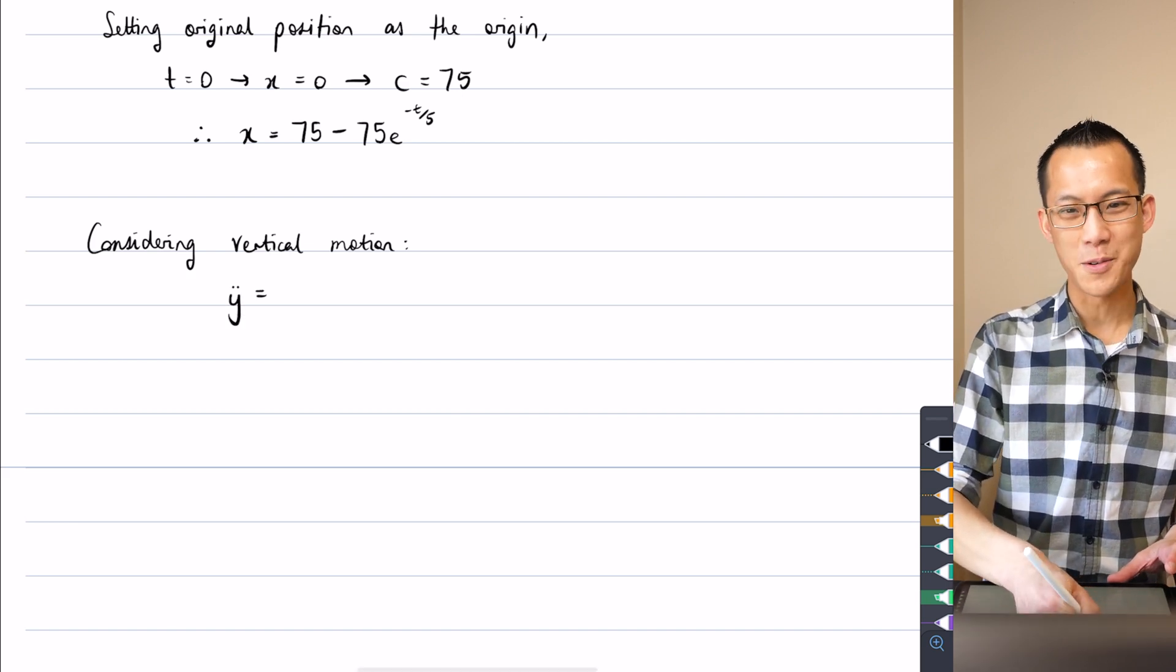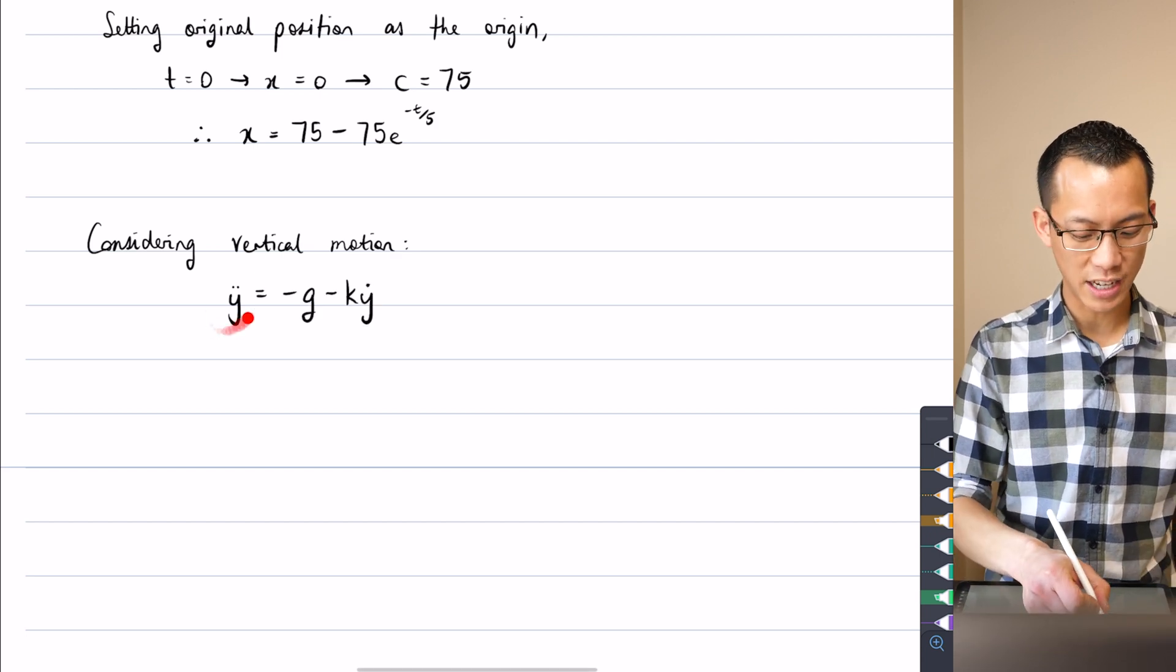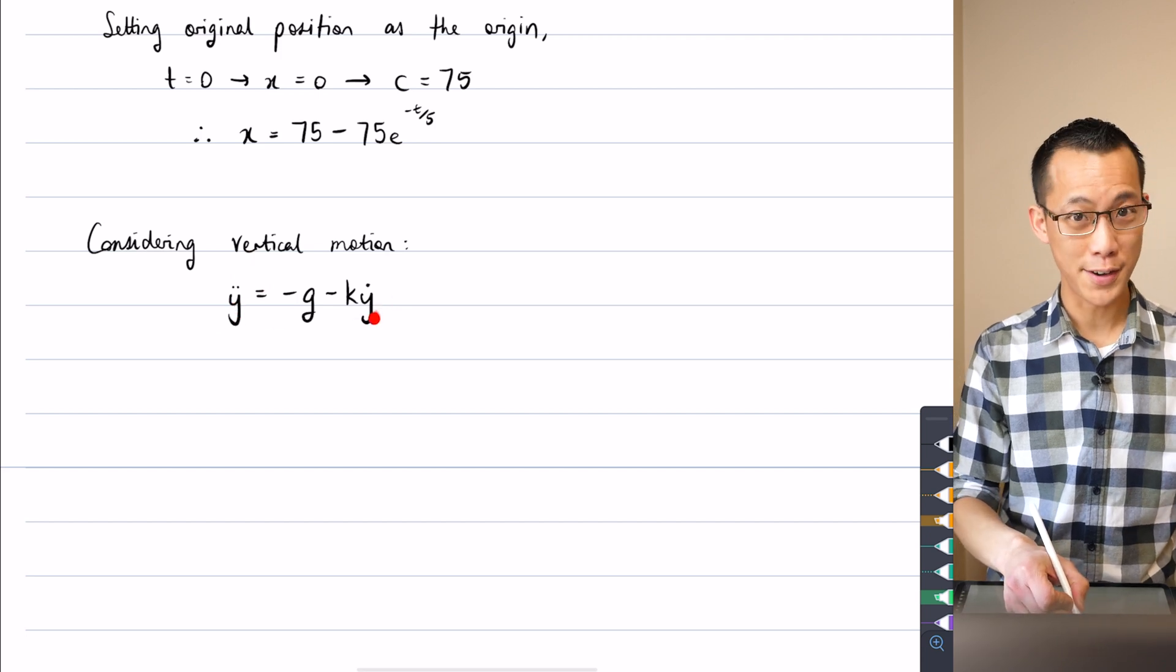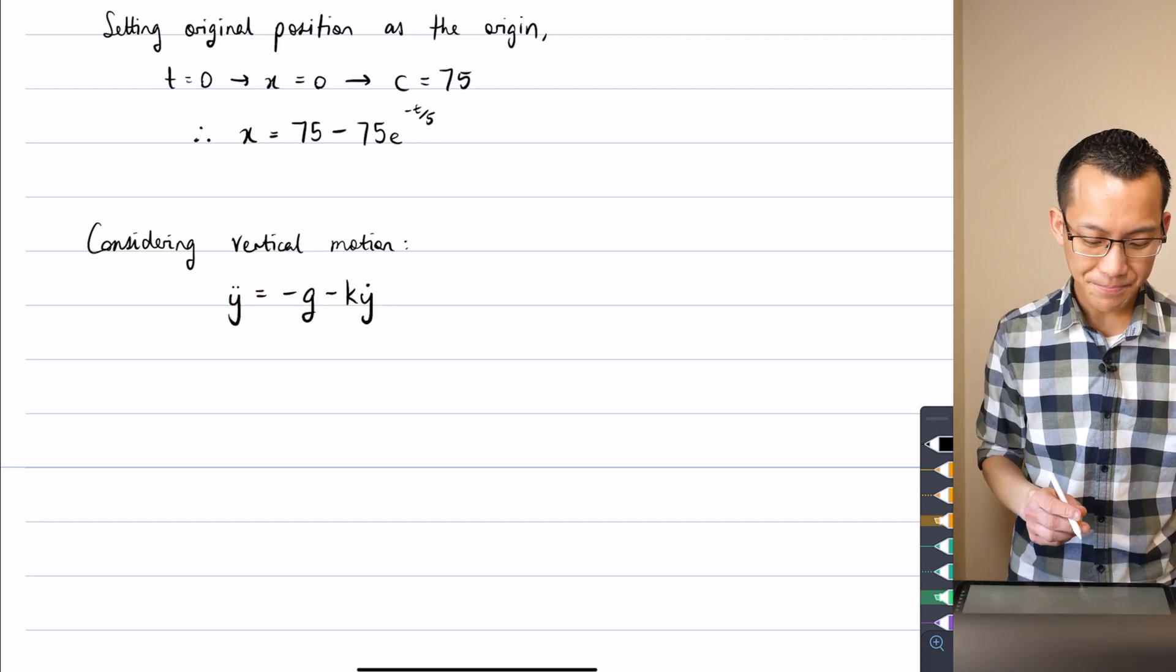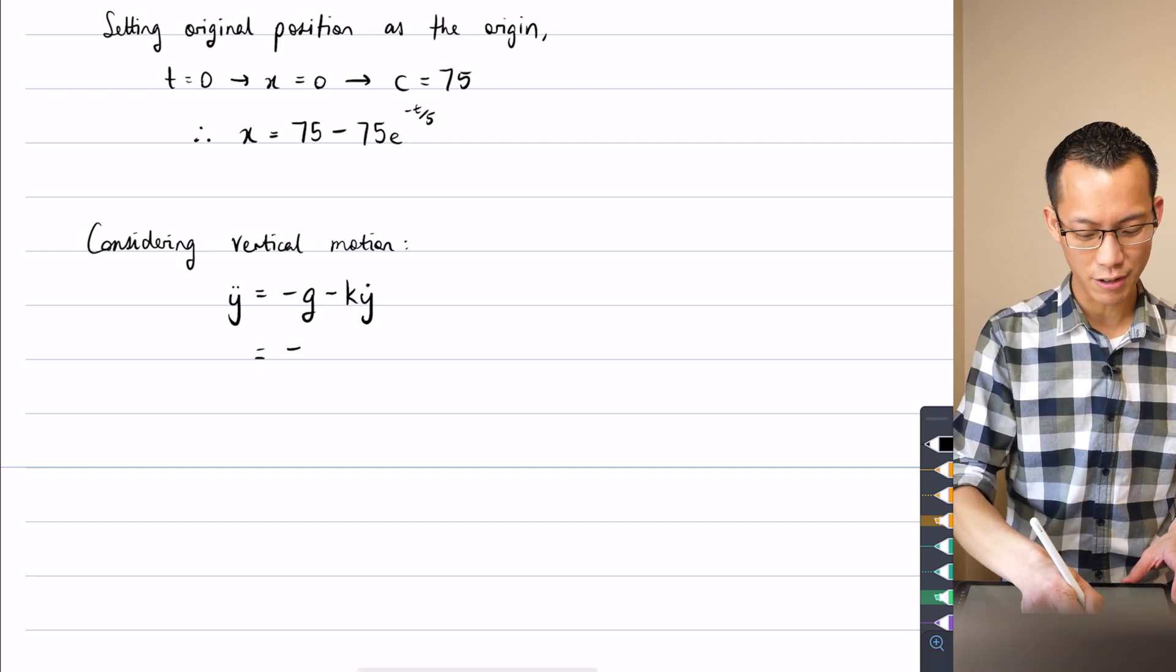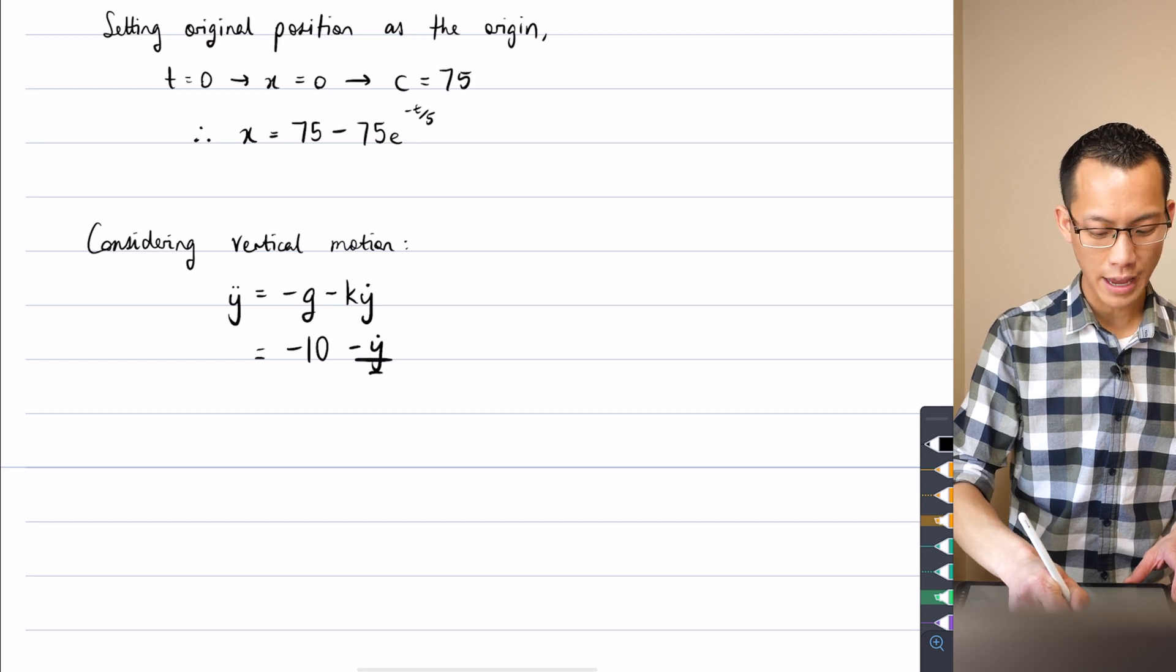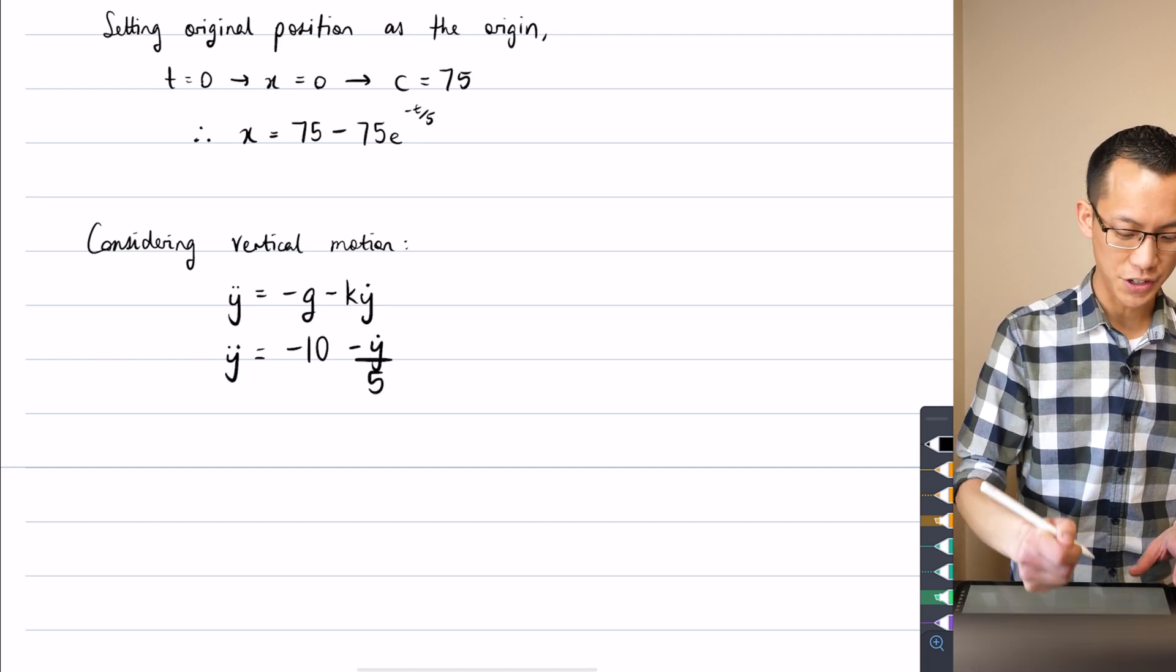y double dot equals minus g minus k y dot. So that was the second derivative from the left-hand side. And there's that first derivative in there for velocity. I'm going to put in my values for g and for k. And I think we said gravity was 10. And then I had a fifth for k. So that gives me this equation.